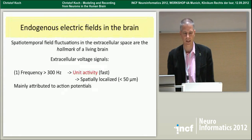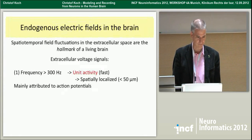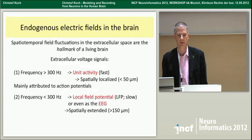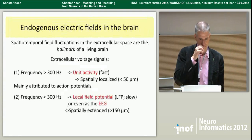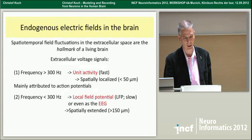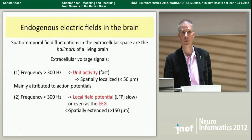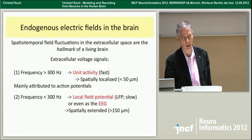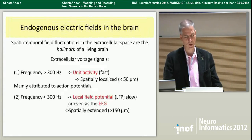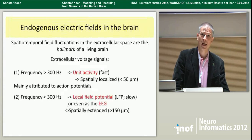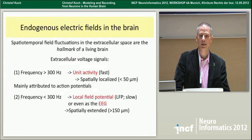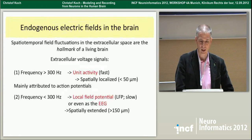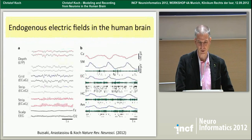Every time you stick an electrode inside the brain, you measure an electrical signal. The high-frequency portion we associate with unit activity — either single unit or multi-unit activity — that's a classical extracellular recording. The low-frequency component, typically below 300 or 500 hertz, we call the local field potential. It should really be called the local potential, but everybody now calls it field.